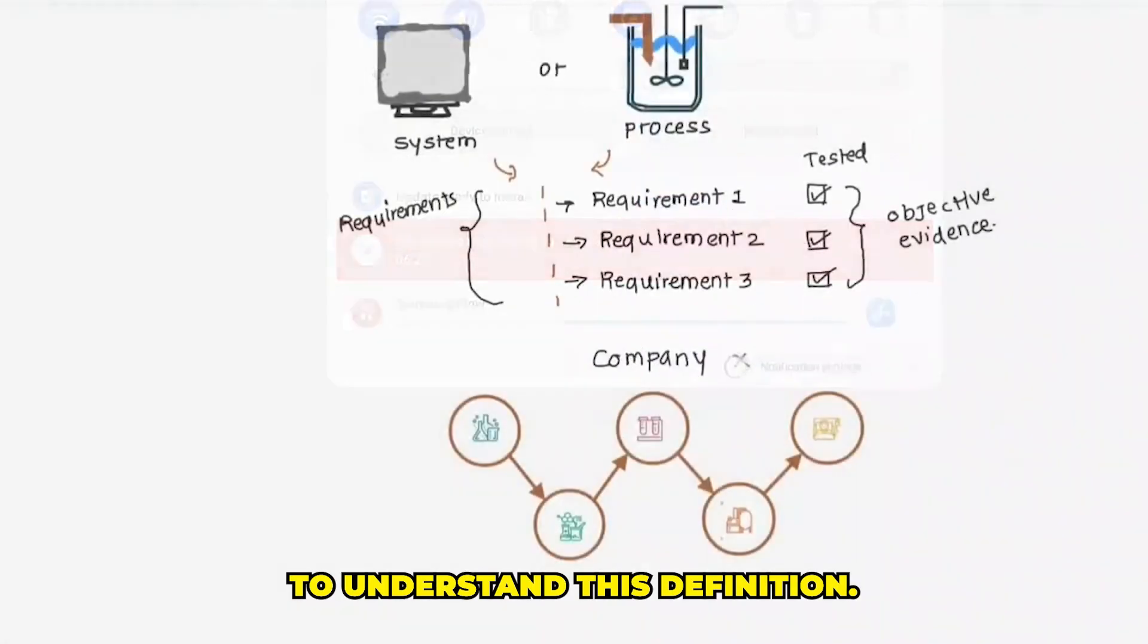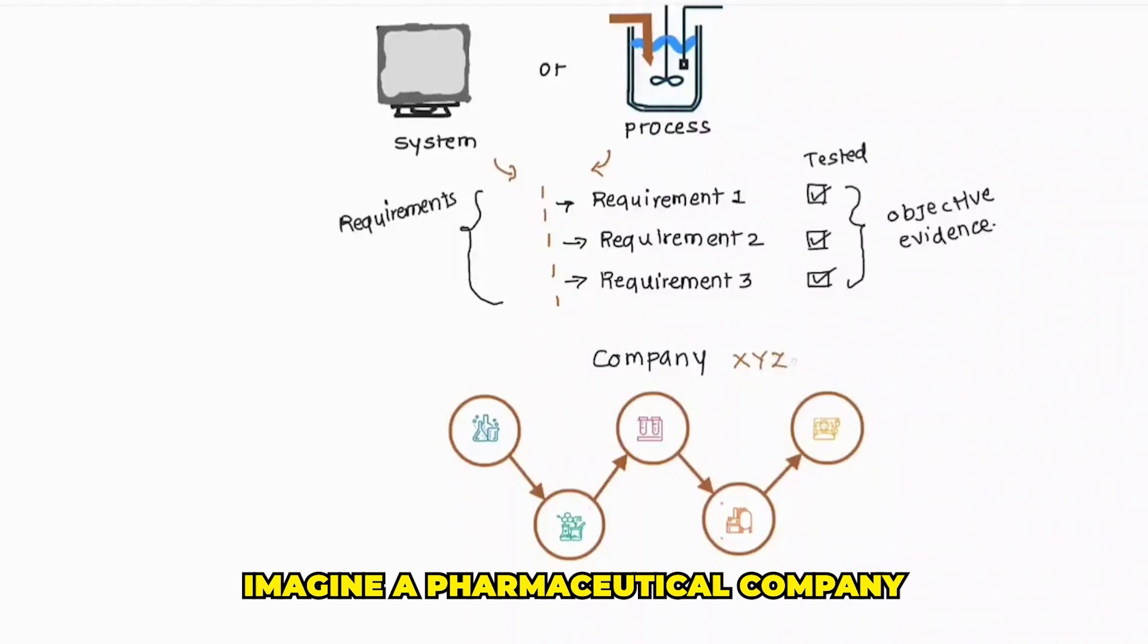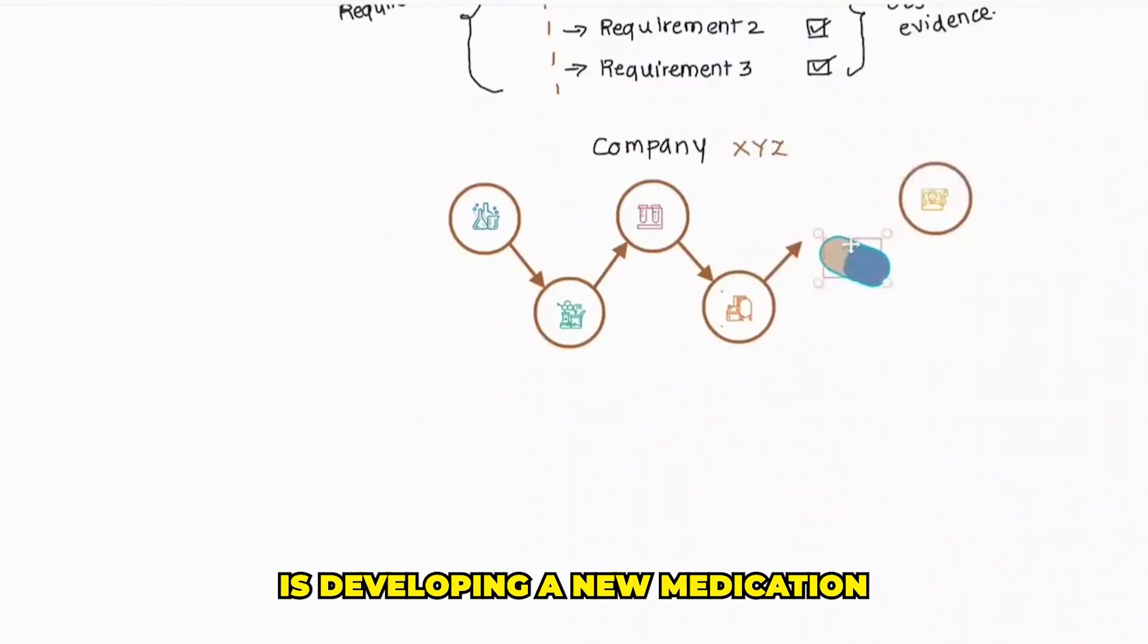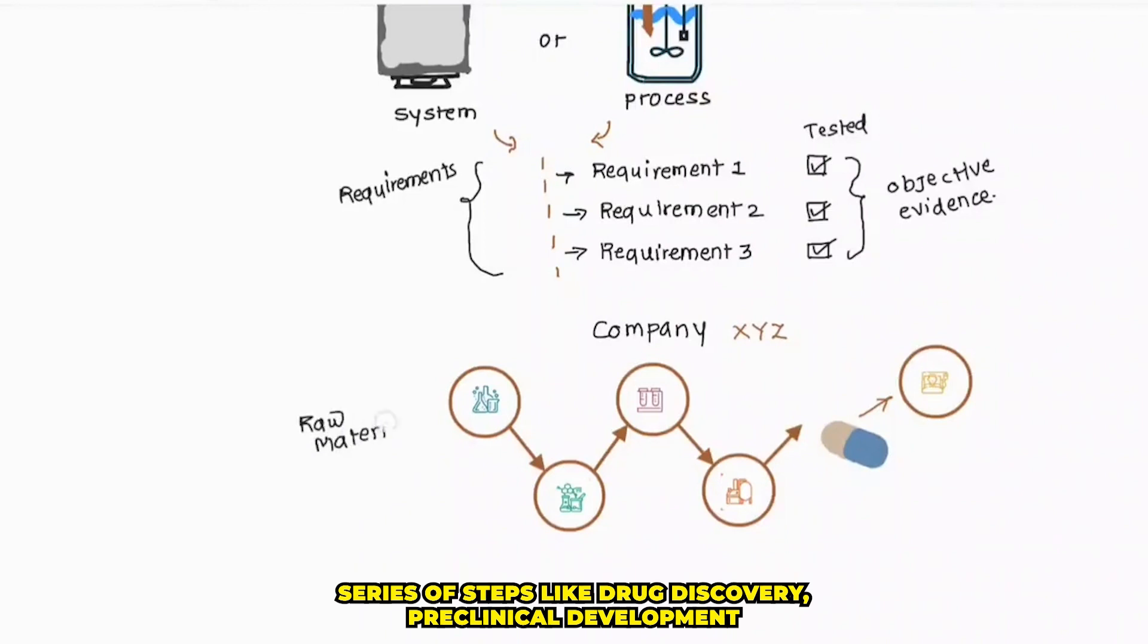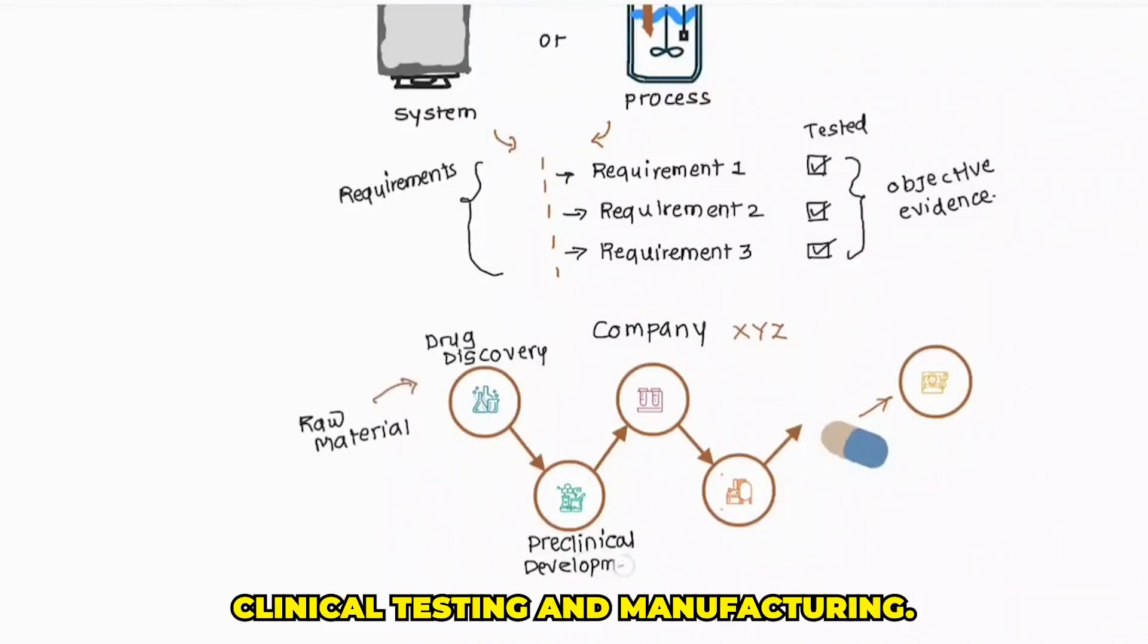To understand this definition, imagine a pharmaceutical company is developing a new medication. To get the desired final product, raw material has to go through a series of steps like drug discovery, pre-clinical development, clinical testing, and manufacturing.